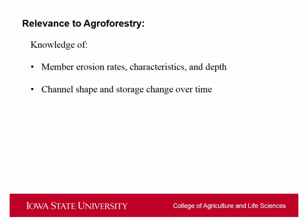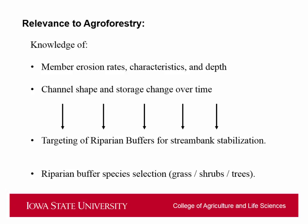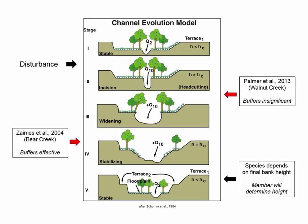I really want to make this relevant to agroforestry — in my mind, channel and stream bank erosion and riparian trees really go hand in hand. At the end of this study we'll have a really good estimate of how each stratigraphic member erodes and behaves over time, including its texture and depth. We'll also know how channel shape, cross-sections, and sediment storage change over time, which I think will give us a really good idea of how to optimally target riparian buffers for streambank stabilization and species selection.